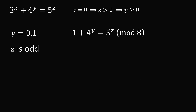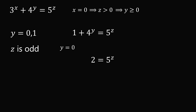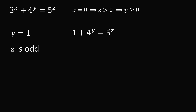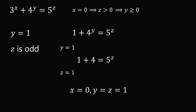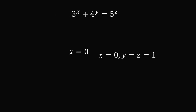Let's analyze each case. If y equals 0, substituting in gives the equation 2 equals 5 to the power of z, which has no integer solutions. So y cannot be 0. We are left with y equals 1. Substituting y equals 1, we get 1 plus 4 equals 5 to the power of z, which has the obvious solution z equals 1. So this gives the solution x equals 0 and y and z are both equal to 1.